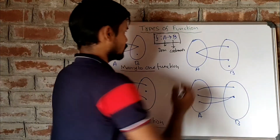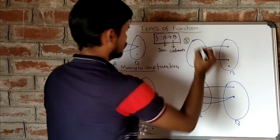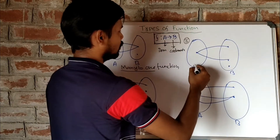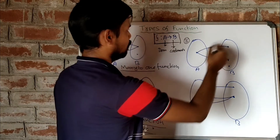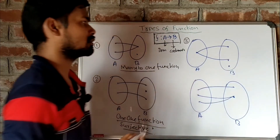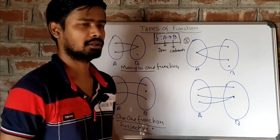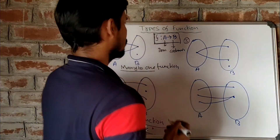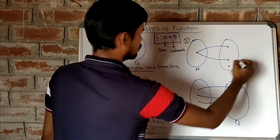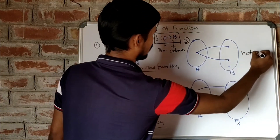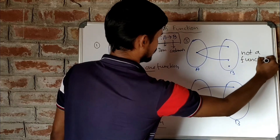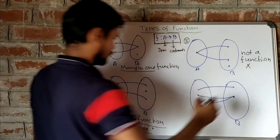Next, the third one. Here, one element of the domain set maps with two distinct elements of the codomain set, which by the definition of function is not possible. So this is not a function.